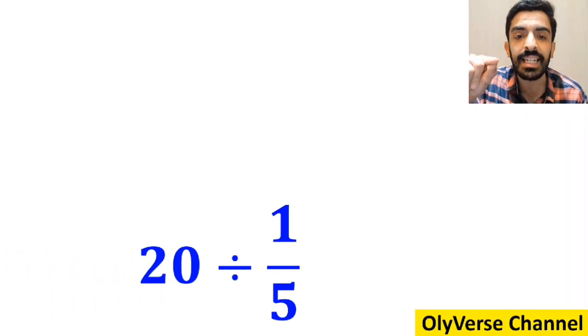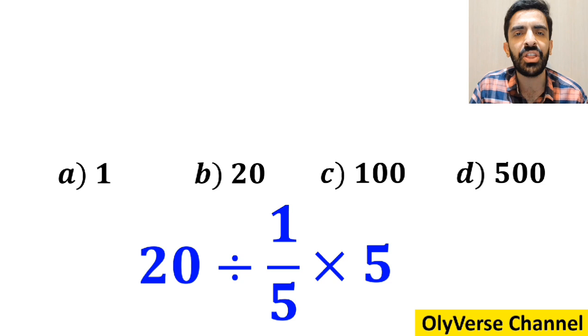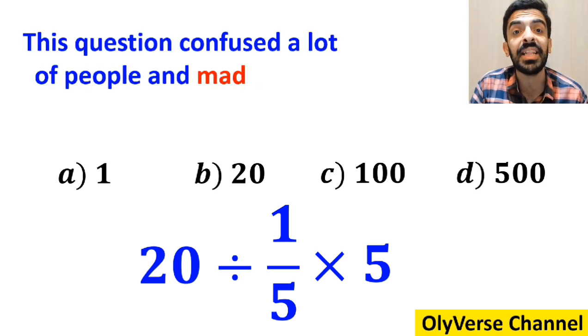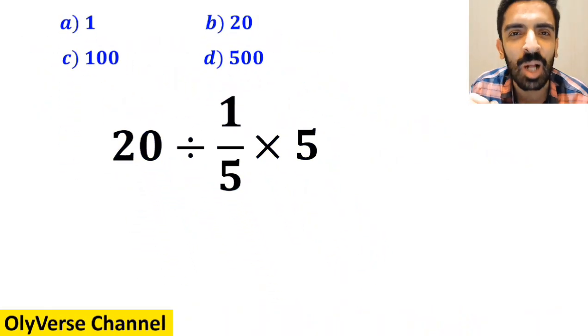What is the value of the expression 20 divided by 1 over 5 multiplied by 5? Which option do you think is the correct answer to this question? This expression confused a lot of people and made them choose the wrong option. Let's take a closer look and solve it together.